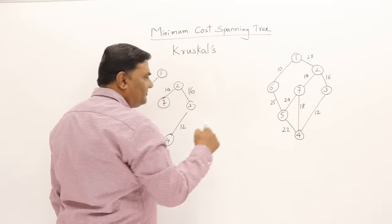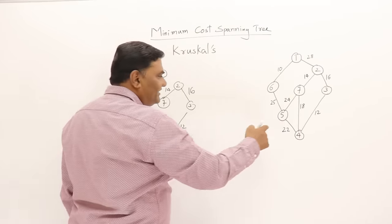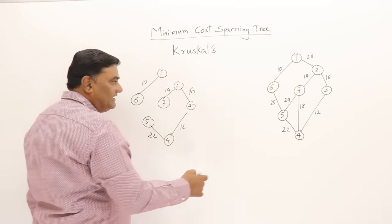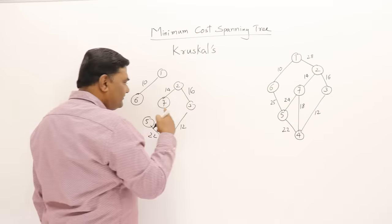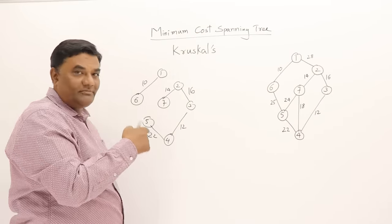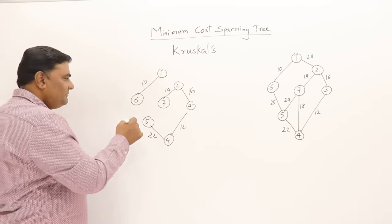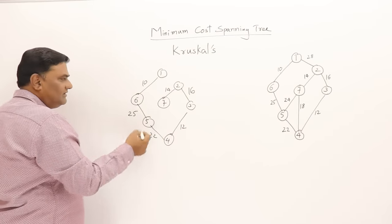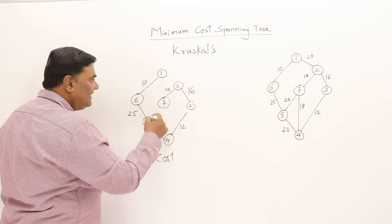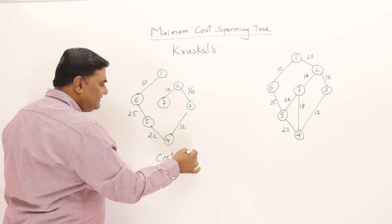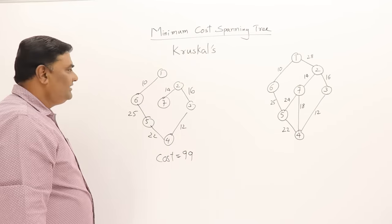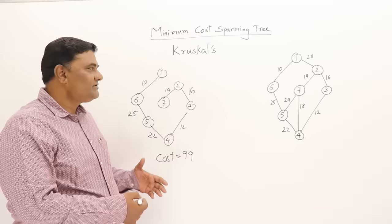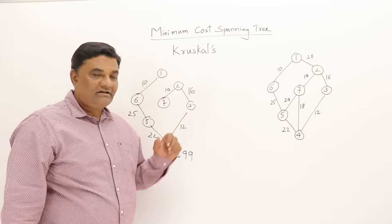If including 4 to 7 forms a cycle, skip it and check the next. The next is 22, from 5 to 4. Next minimum is 24 from 7 to 5 — but that also forms a cycle, so skip it. Then the next minimum is 25 from 5 to 6. Adding all selected weights gives 99 — the same result as Prim's algorithm on this graph.